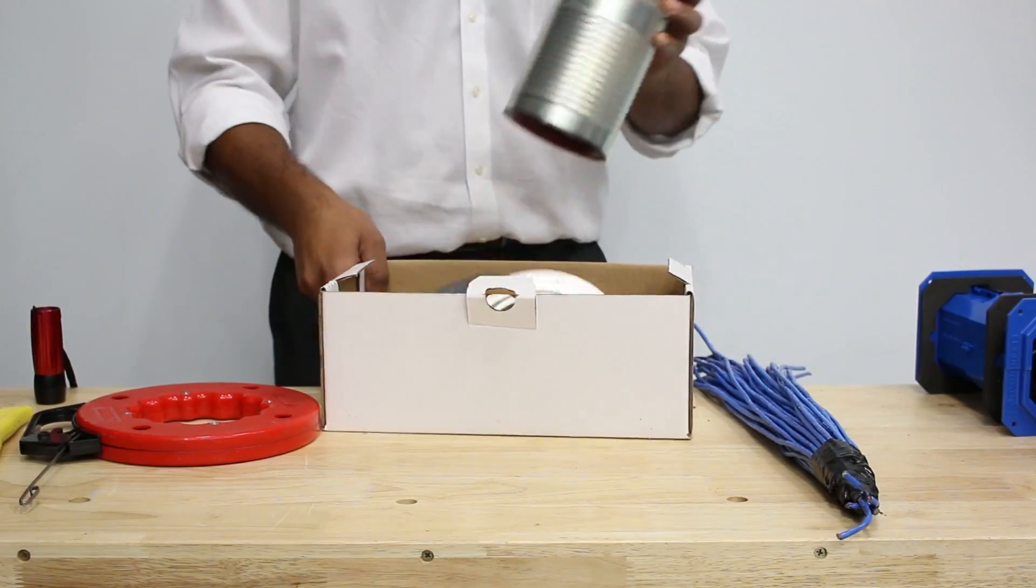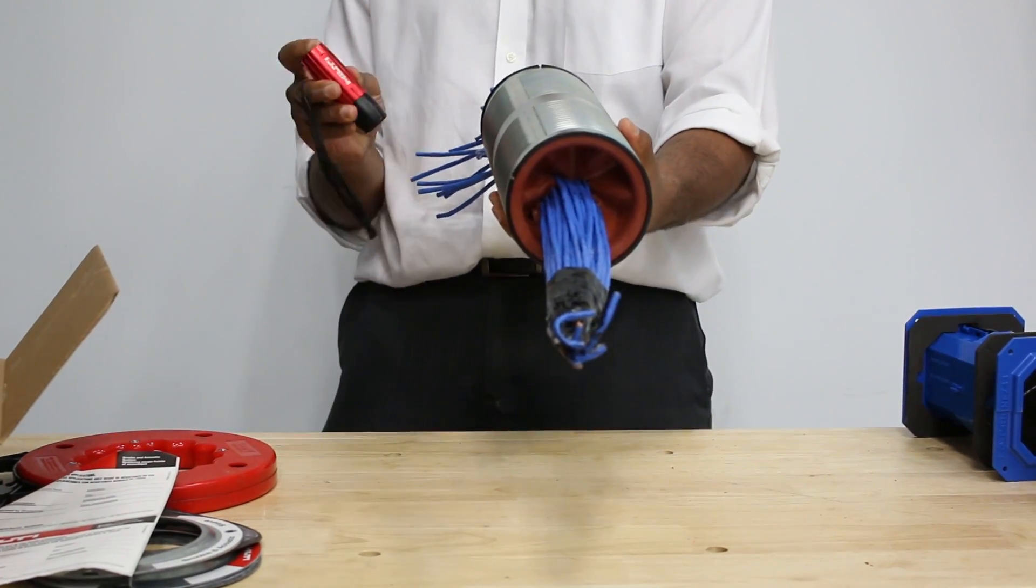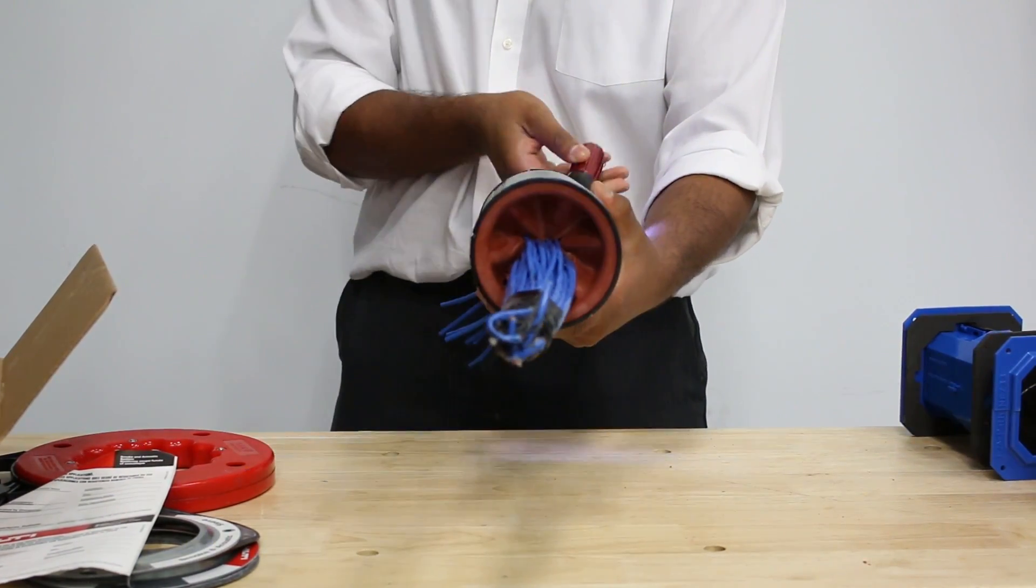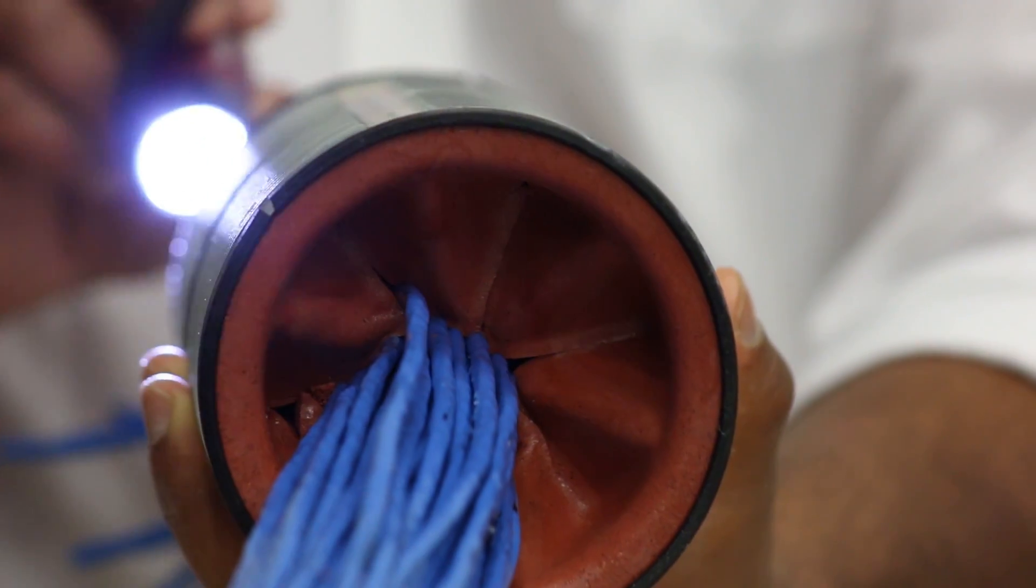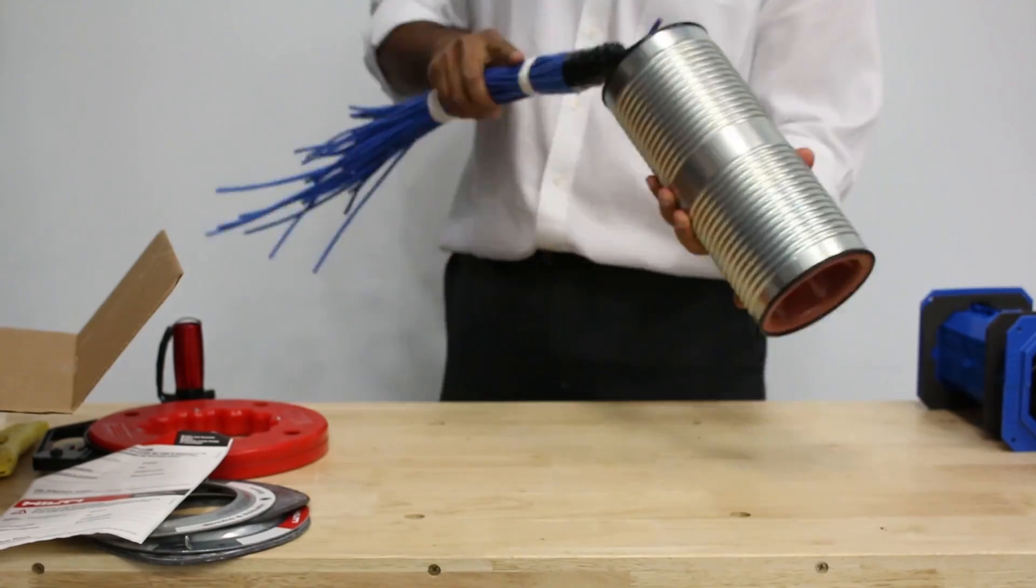The Hilti CSL SA smoke and acoustic sleeve, new out-of-the-box, is easy to install and, as you can see, creates a much better seal around the cable bundle, resulting in the industry's best STC and L ratings when in use.